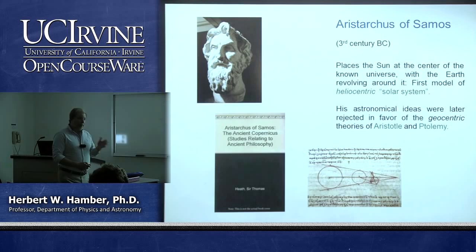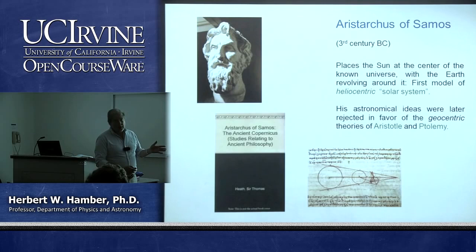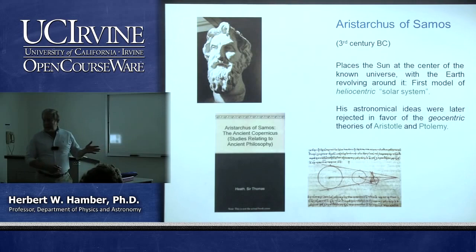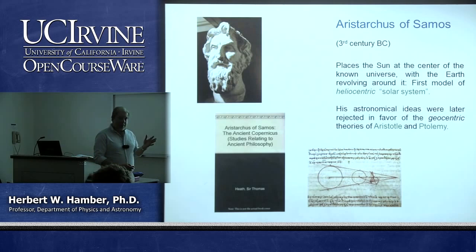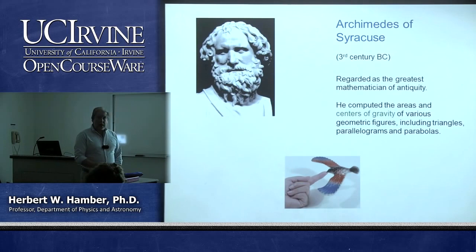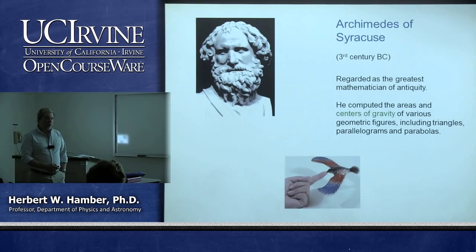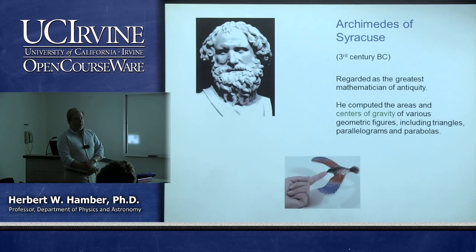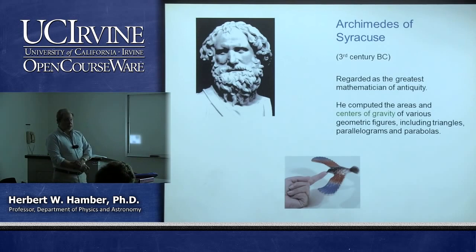What happened in the intervening 1,700 years? The answer was that it didn't suit the church that man was not at the center of the universe—the heliocentric system puts the sun at the center, not Earth. Because of this, that great discovery was forgotten and buried. As for gravity itself, Archimedes did not give direct contributions—he studied levers and ingenious mathematical calculations—but he was the one who figured out how to calculate the center of gravity of a body.